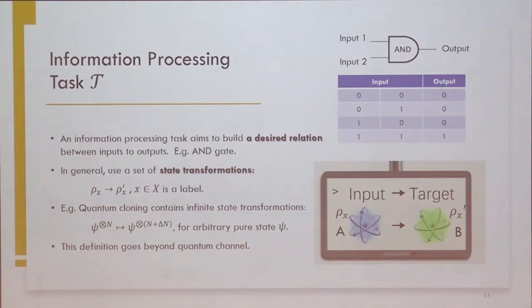So let's begin with information processing tasks. As I mentioned earlier, it's just a desired input-output relation. For example, for classical operation like AND gate, you can specify this operation by this binary table. Similarly, for quantum task, we can specify the input state and output states. And it's not just for one state transformation. It's for all. So you have a label that labels all possible state transitions that is required for accomplishing the task. For example, this is the task for quantum cloning. You have n-copies of unknown pure state. You can generate additional n-copies. And as I mentioned earlier, this definition actually goes beyond quantum channel.